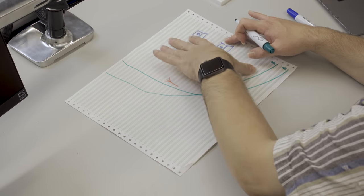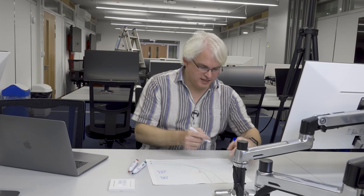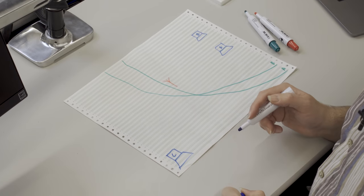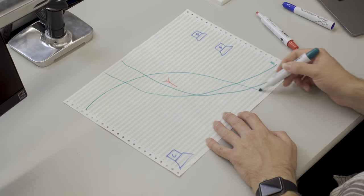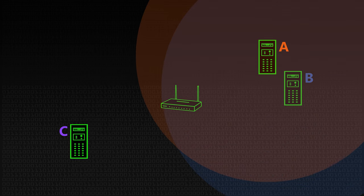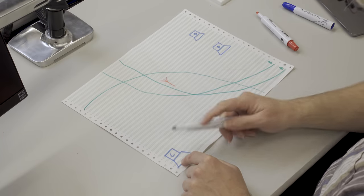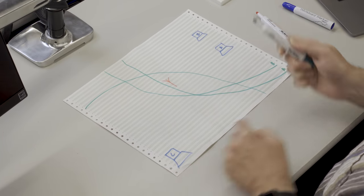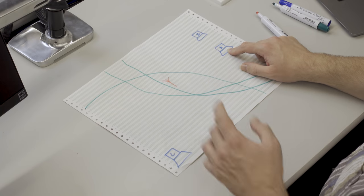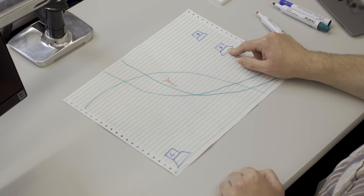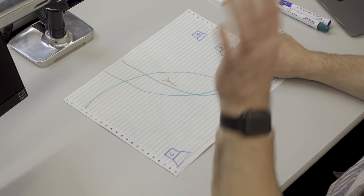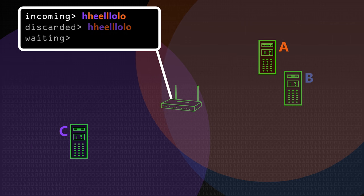Let's suppose we have a third machine — machine C — right down here. Its transmission range circle reaches the access point fine, and machine A can also transmit to the access point. But the key problem is that machine C is out of range of both machine A and B. So machine A decides the network is clear because it can't hear anything, and machine C does exactly the same thing — they both try to transmit at the same time, and what's received by the access point is corrupted data. Neither packet gets through. This is the hidden node problem.